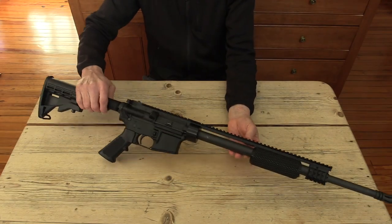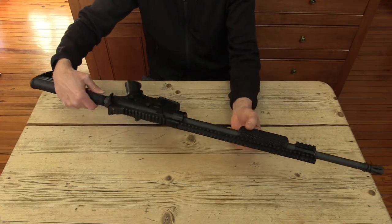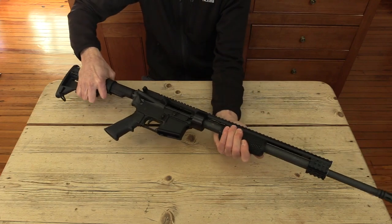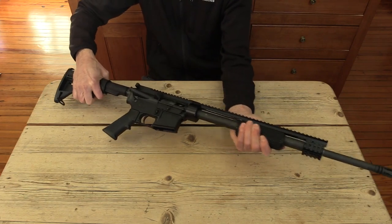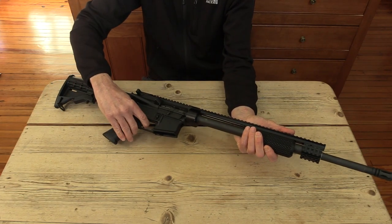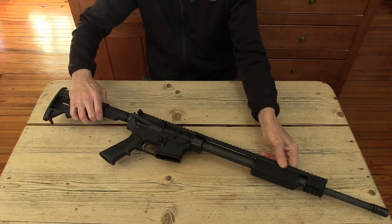Operation is very simple. Load a magazine the same way you always have. Release the bolt carrier group to tune to the first round. Load successive rounds by cycling the pump hand grip and bolt carrier group manually.